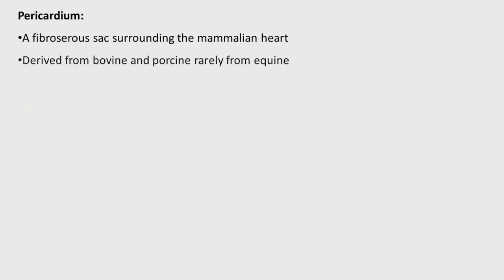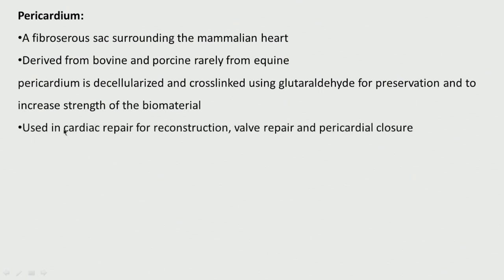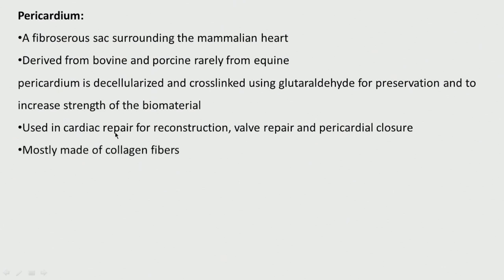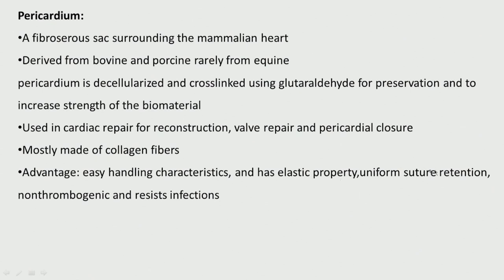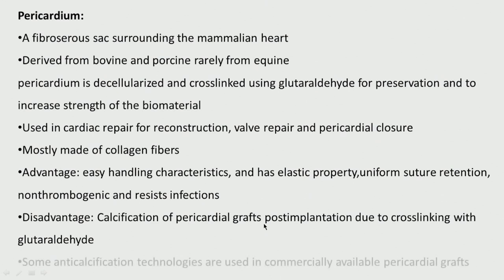Pericardium is a fibrous sac surrounding the mammalian heart. It can be harvested from bovine or porcine sources, then decellularized and cross-linked using glutaraldehyde to increase strength and for preservation. It can be used for cardiac repair and reconstruction, valve repair and pericardial closures. It is mostly made up of collagen fibres, has easy handling characteristics, is elastic and uniform with good suture retention, is non-thrombogenic and resists infection. A big problem is calcification of pericardial grafts after implantation due to cross-linking with glutaraldehyde.